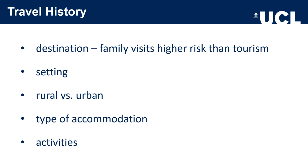Consider the setting: were they out in the country, staying in a hotel, at a holiday club? Was it rural versus urban? What type of accommodation — family, friend, hotel, outdoors, camping? What activities did they undertake — did they go to a game park, go swimming, or was it a business trip? You also need to ask about sexual activities.